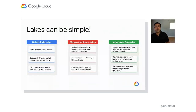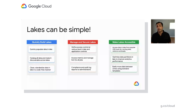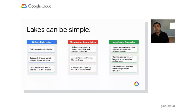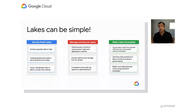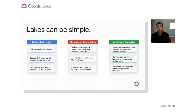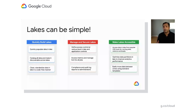The next pillar is standardizing and cleansing the data. As the data lands in the lake, it has to be cleansed, standardized, and canonicalized to conform to a standard format appropriate for the organization — things like SSN, phone numbers, and zip codes must be processed in a standard fashion. These transformations take a lot of time, so they need to be simplified, ideally with a code-free tool.